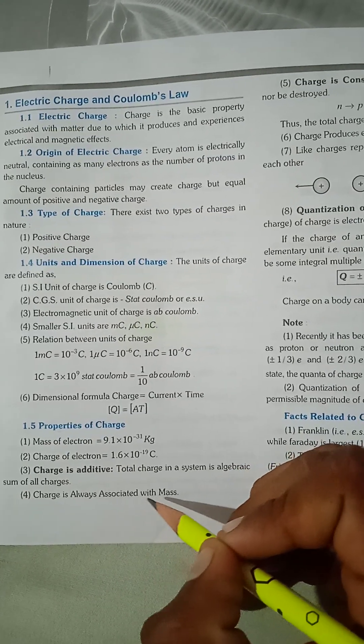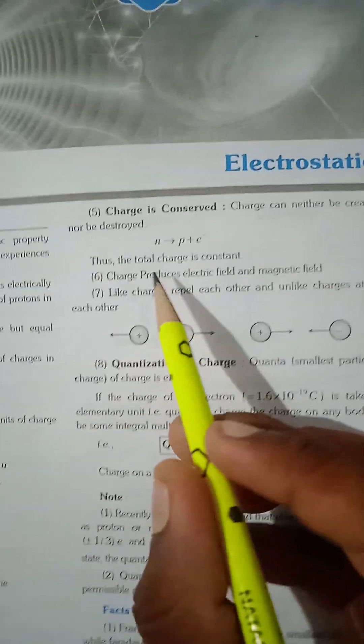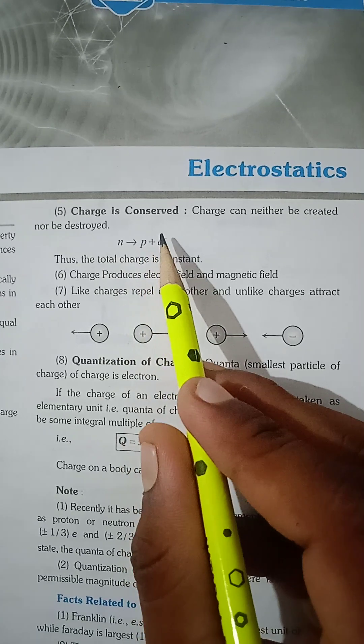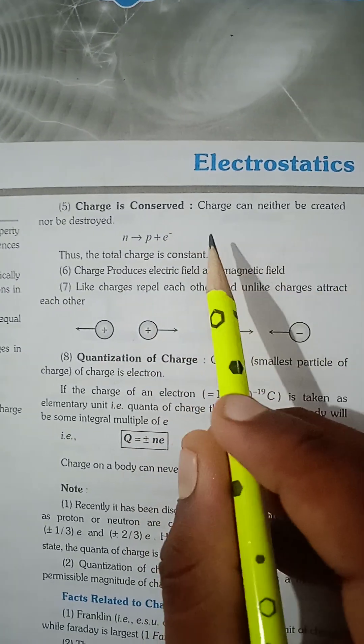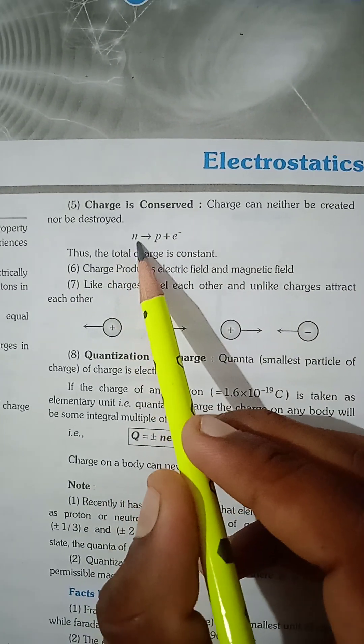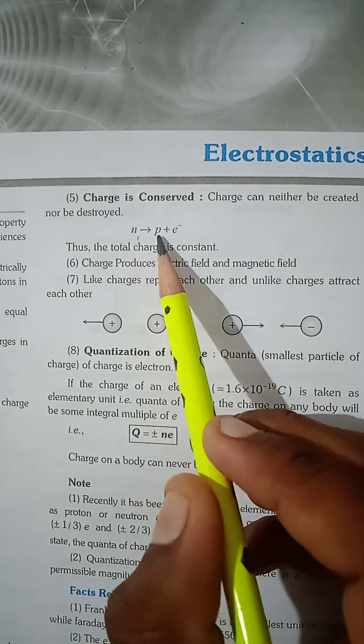Charge is always associated with mass. Charge is always conserved - charge can neither be created nor be destroyed. For example, when photon gives electron plus positron.